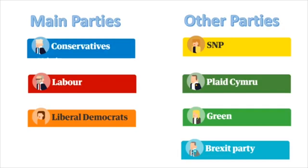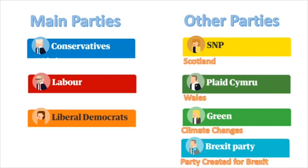There are seven main political parties in the UK, excluding DUP which stands in Northern Ireland. Conservatives, Labour, and Liberal Democrats are the main parties. We also have SNP (Scottish National Party), Plaid Cymru, Green Party, and Brexit Party. Plaid Cymru is the main party in Wales. The Green Party was created mainly around climate change, and the Brexit Party was created by Nigel Farage specifically for Brexit.